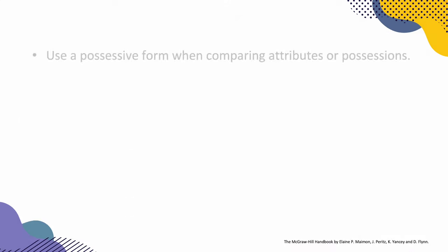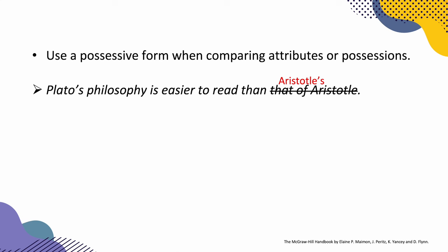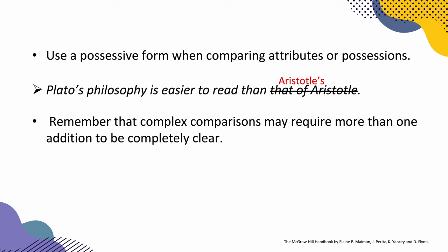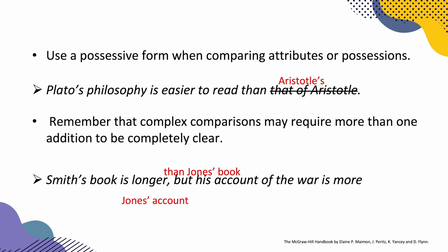Use a possessive form when comparing attributes or possessions. For example: 'Plato's philosophy is easier to read than that of Aristotle' — it's better to write 'Plato's philosophy is easier to read than Aristotle's.' Remember that complex comparisons may require more than one addition to be completely clear. For example: 'Smith's book is longer but his account of the war is more interesting than Jones' — it's better to write: 'Smith's book is longer than Jones' book, but his account of the war is more interesting than Jones' account.' The message is specific and clear.